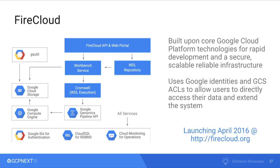We built FireCloud on top of core Google Cloud Platform technologies for rapid development, security, reliability, and scalability. The workflow description language and Cromwell execution service power our genomics data factory and sit on top of the Google Genomics Pipelines API, Compute Engine, and Google Cloud Storage. We use Google identities for access control, so users can log in, access their data, and also go directly to GCP to see the same data in their own buckets. You're not locked into the platform — the data is yours. The system is currently in alpha, launching in early April at firecloud.org.